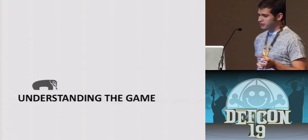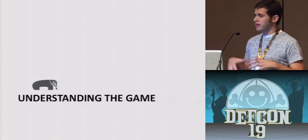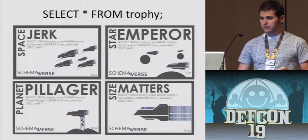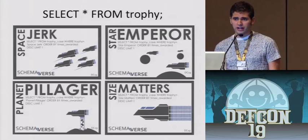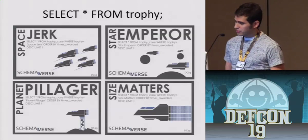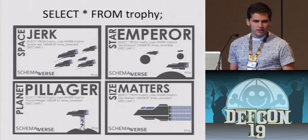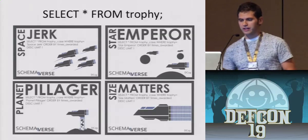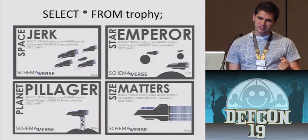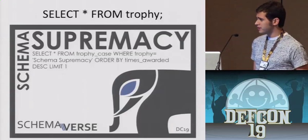Getting into the actual gameplay. As I mentioned, it's a tick-based game — everyone goes, it finishes, new tick starts up. Basically, you command an army of ships who go out, conquer planets, and fight each other and blow things up. In the game, there's a bunch of different goals you can have: you can be a space jerk running around blowing people up, the emperor conquering every planet, the planet pillager mining all the land resources to build bigger things, or pursue 'size matters' by building the biggest ships. But the one overall goal is to do all of those things and become the scheme of supremacy.